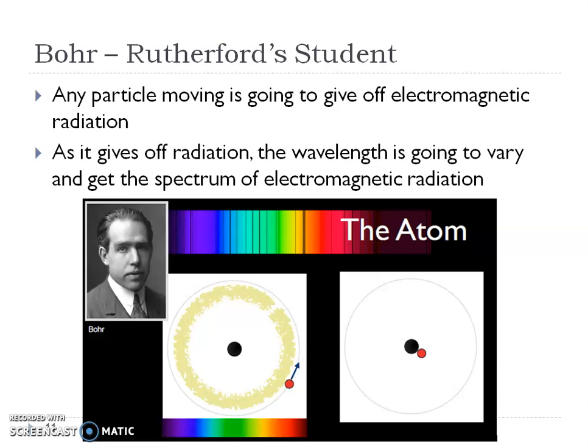So Bohr came in and said, well, that's half good, but half not good. And why? Because he said any particle moving is going to give off some of this electromagnetic radiation. And as it gives off this electromagnetic radiation, there's going to be a wavelength that corresponds to it and this spectrum.